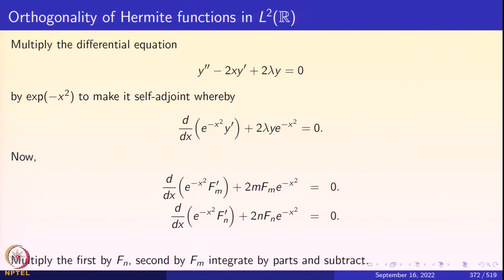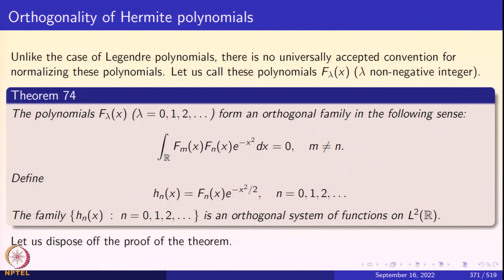Since the boundary terms drop out, the term from integration by parts — namely minus the integral of e^(−x²) f_m′ f_n′ — appears from both equations and cancels when we subtract. What remains is that 2(m − n) times the integral over ℝ of f_m f_n e^(−x²) dx equals 0, which is exactly the orthogonality statement. This completes the proof of orthogonality of the Hermite polynomials with respect to the measure e^(−x²) dx.